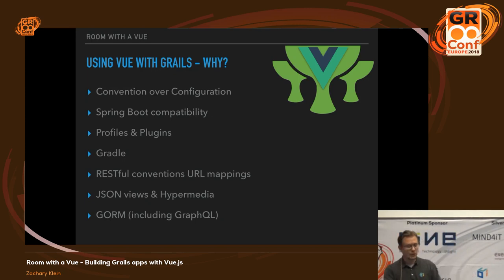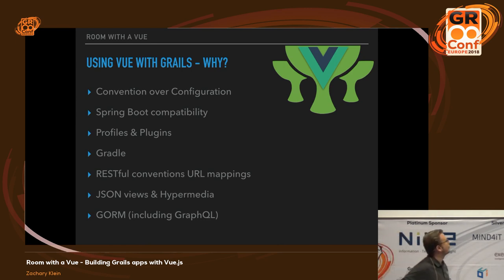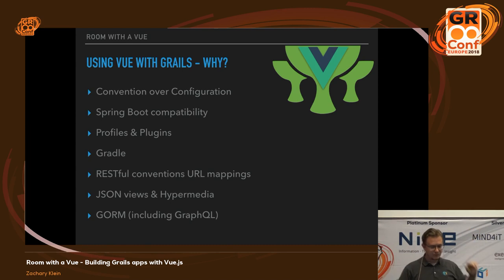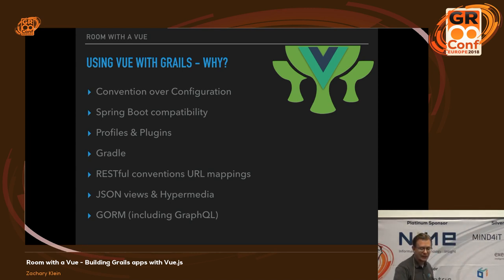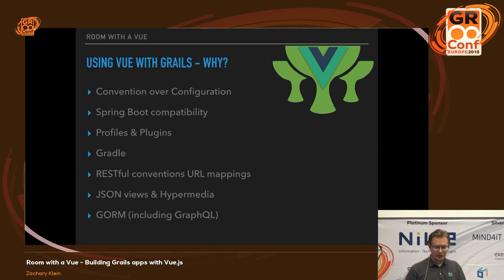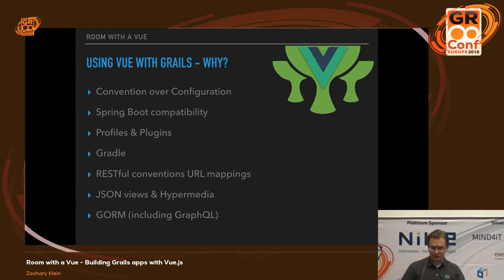So we're about to get into the code here — just a couple of slides on how we use Vue with Grails. These are reasons why I think Grails is still a good fit for a back end for single-page applications like the kind you might build with Vue.js. It's a great RESTful back end. We have GORM, JSON views, lots of great plugins. The Spring Security plugin I think is really a compelling resource that you don't get when you leave Grails. So there are a lot of good reasons to still choose it.